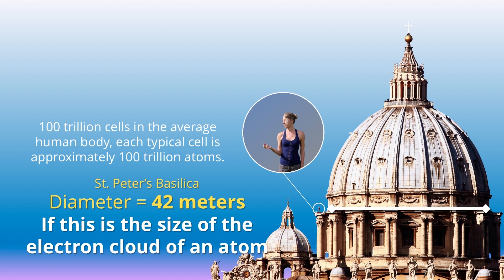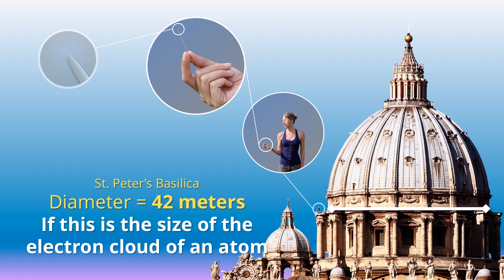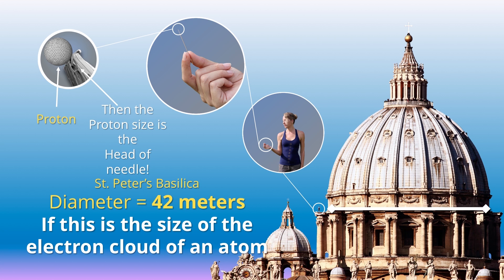So atoms are extremely small. And so if I made an atom the size of the Vatican Dome, then the nuclei in the middle of that atom — the little proton — would be approximately the size of the head of the pin that Susan is holding there. So if you're holding a pin in the middle of the Vatican, you're already small relative to the Vatican Dome, and the head of that pin is the nuclei of an atom.